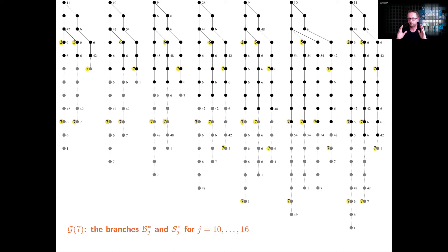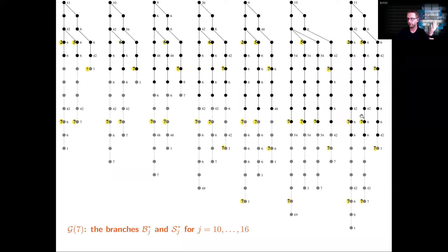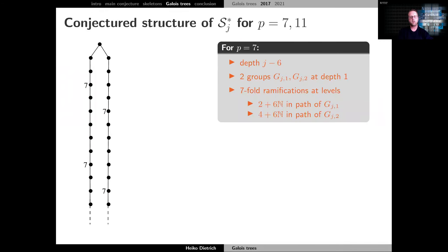Once we computed these graphs it was a mess, but in compact form you can see these graphs are actually really nice with a lot of periodicity. For example, the ramifications always seem to be 7 — this group has 7 descendants, this group has 7 descendants, and so on — and these ramification levels seem to happen also with periodicity 6. There's a lot of structure when you look at these graphs in the right form.